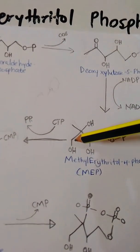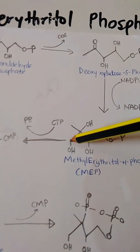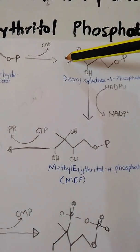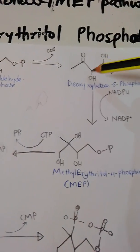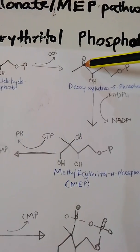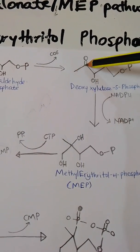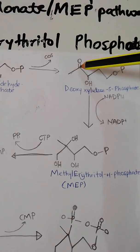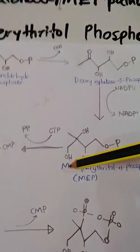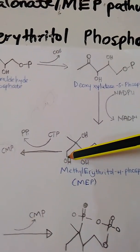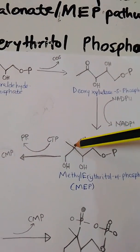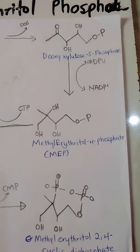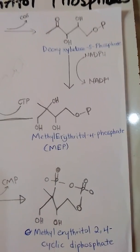So here is the net compound. There is an intramolecular rearrangement — movement of the methyl group from one carbon to the adjacent carbon — followed by the reduction of that carbon to an alcohol. The next product is MEP, the methylerythritol 4-phosphate.